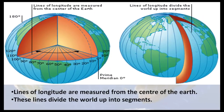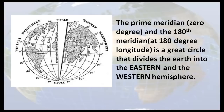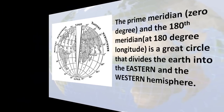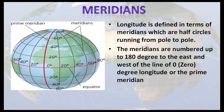Lines of longitude are measured from the center of the earth. These lines divide the world up into segments. The prime meridian and the 180th meridian form a great circle that divides the earth into the eastern and the western hemisphere. Longitude is defined in terms of meridians, which are half circles running from pole to pole. The meridians are numbered up to 180 degrees to the east and west of the line of 0 degree longitude, or the prime meridian.